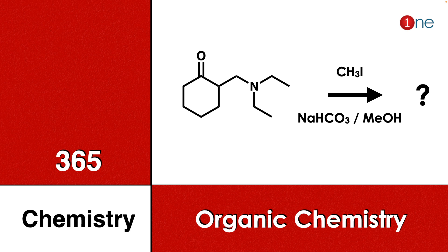Welcome to One Chemistry. This is the 365 Chemistry Series — organic chemistry questions. Here you have cyclohexanone with a side chain amine, reacting with methyl iodide, base, and alcohol. You have to find what will be the final product.